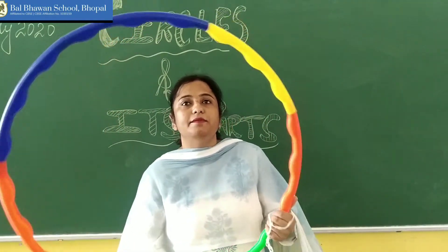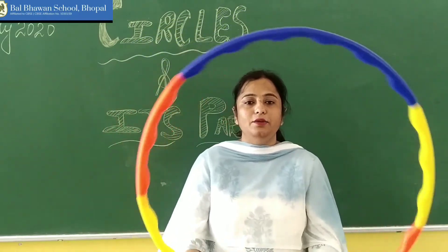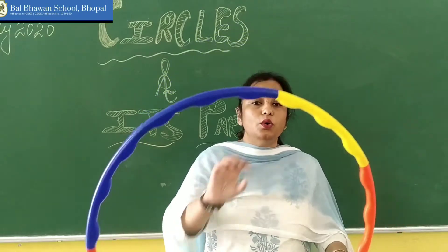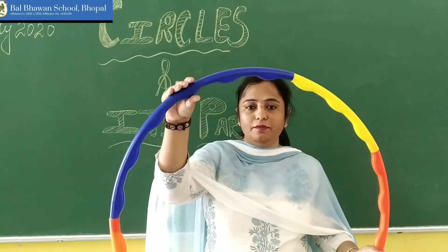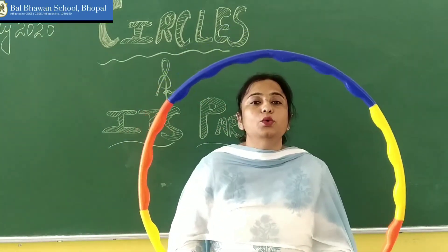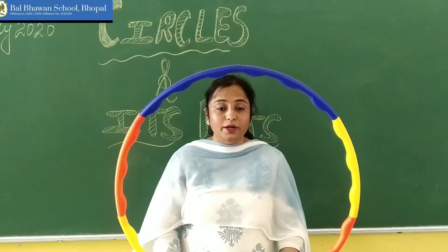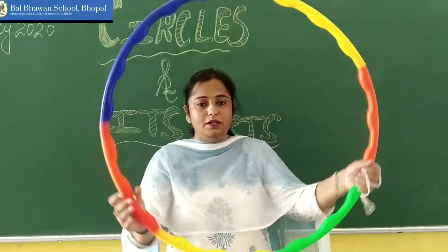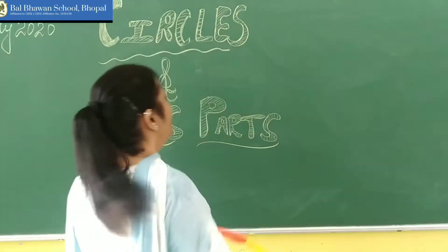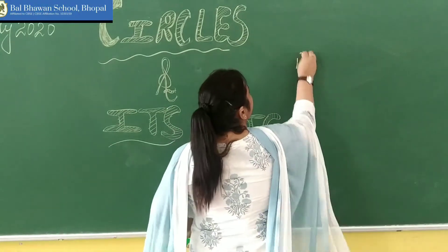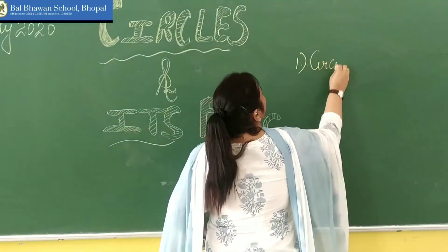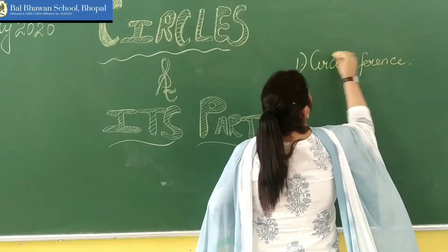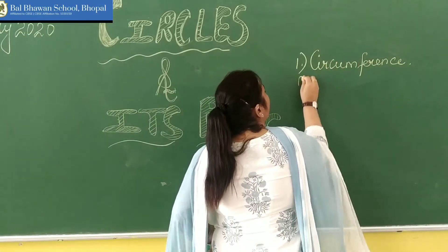Look at the circle which I am holding here. You can see so many colourful circles. This boundary portion of this circle is known as the circumference. What is it known as? Circumference. This boundary of a circle is known as the circumference. So our first part is circumference.